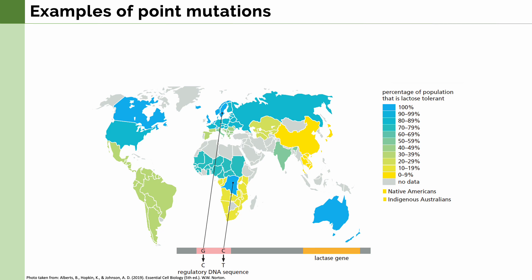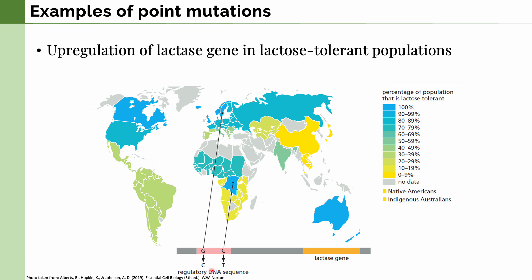Next, let's take a look at a point mutation that affects the regulation of a gene. When we have a point mutation in the regulatory sequence of the lactase gene, there is upregulation of the lactase gene in lactose-tolerant populations. Normally in humans, the lactase gene is downregulated when we become adults because adults are not supposed to be drinking milk. But in regions where milk is part of the diet, individuals have this mutated sequence and are able to digest milk, while in other areas where milk is not common, there is a low percentage of lactose-tolerant individuals.